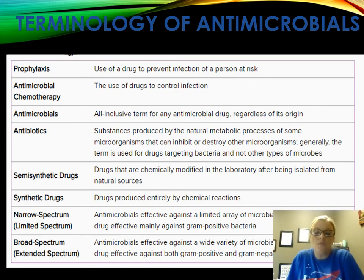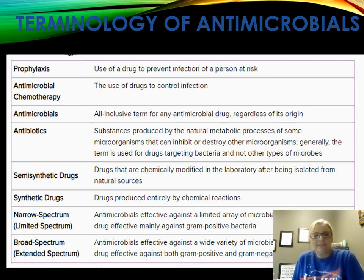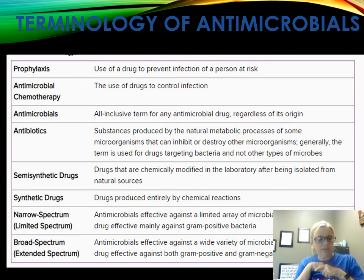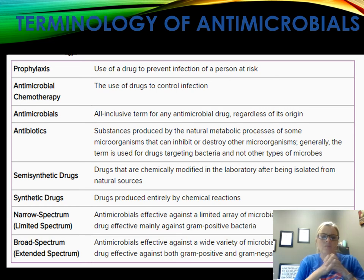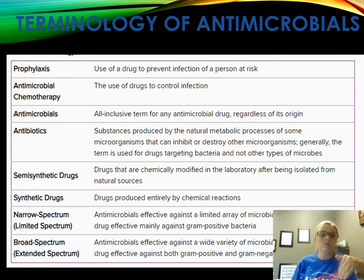Here is important vocabulary to know. Prophylaxis refers to something done to prevent an infection — for example, if you travel out of the country, you may be given a prophylactic to prevent you from catching something. Broad spectrum means a drug can affect a whole range of microbes, as compared to narrow spectrum, which means only a few. Be sure you know all of these terms.